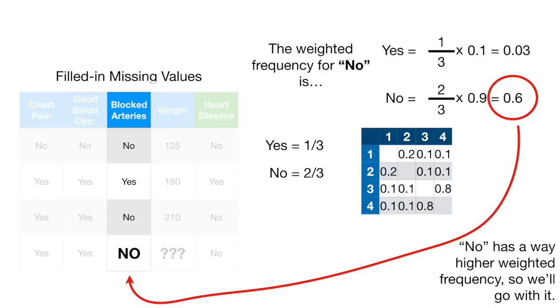In other words, our new, improved, and revised guess based on the proximities is no for blocked arteries.